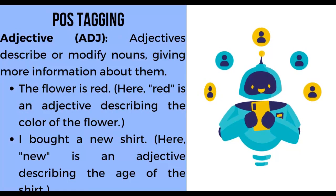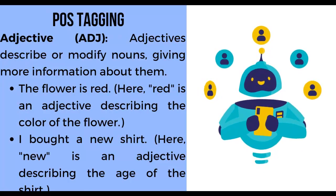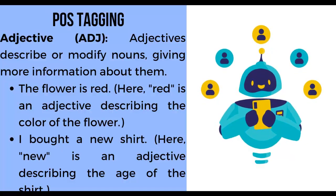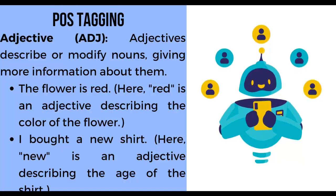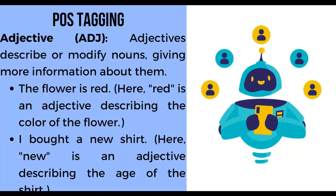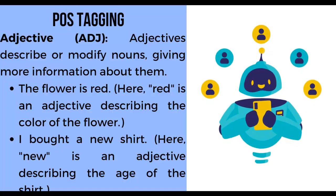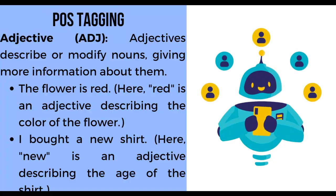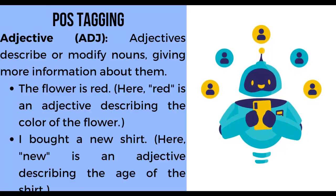Next, adjective. Adjectives describe or modify nouns, giving more information about them. First example: 'The flower is red' — here, 'red' is an adjective describing the color of the flower. Second example: 'I bought a new shirt' — here, 'new' is an adjective describing the age of the shirt.